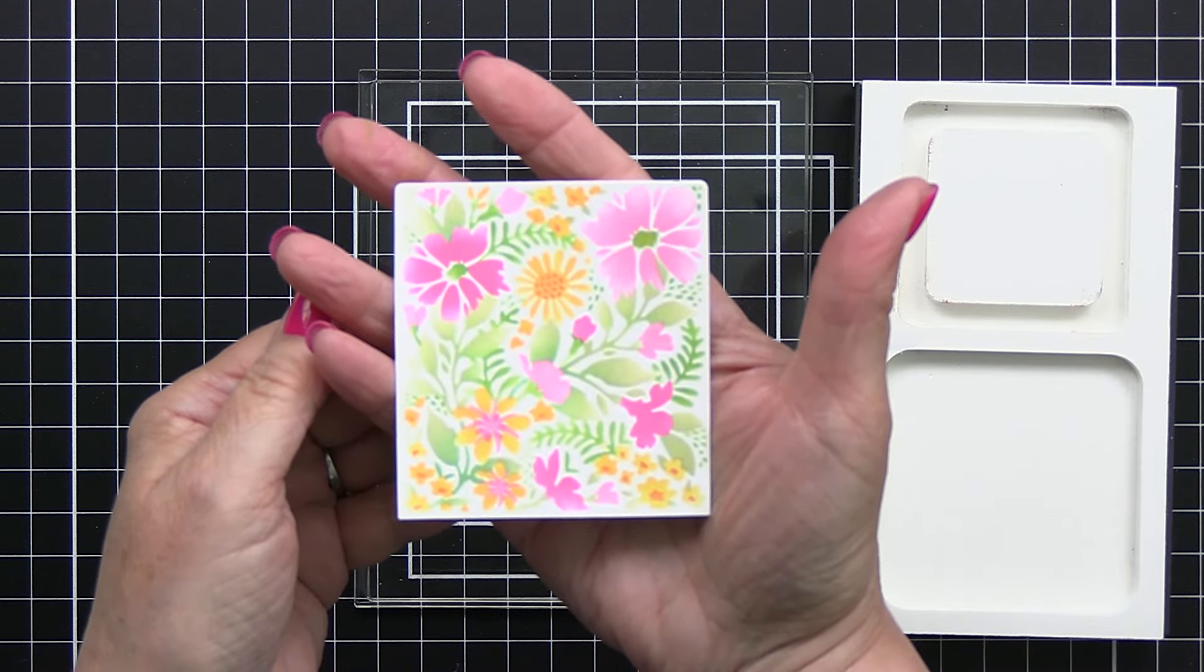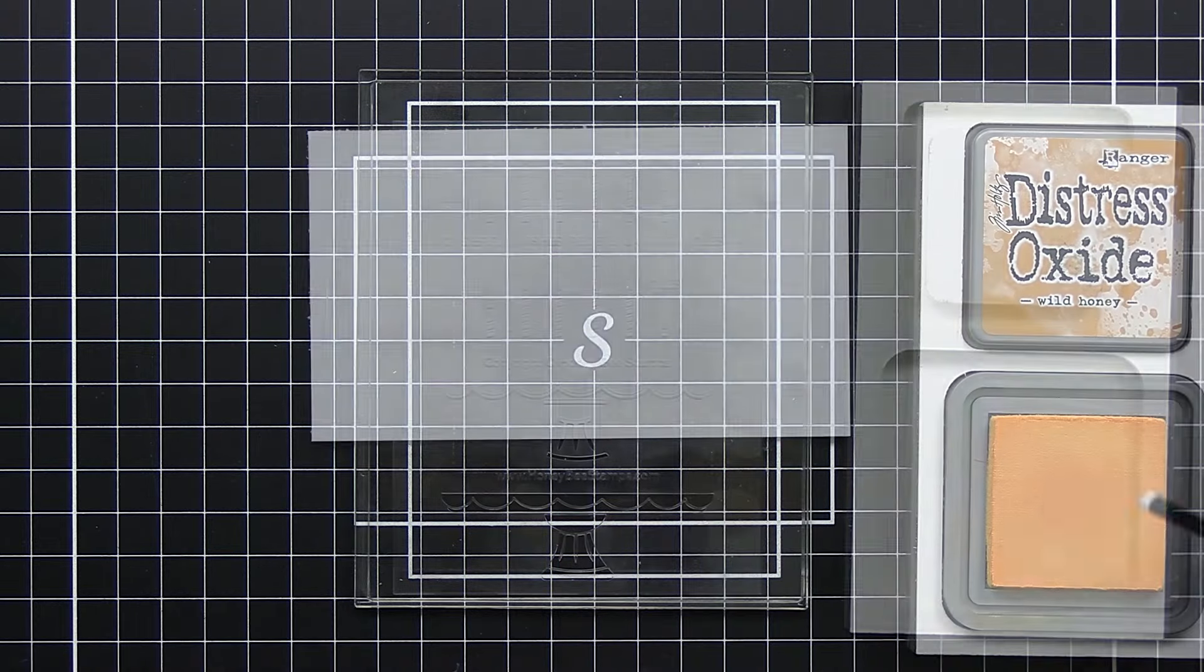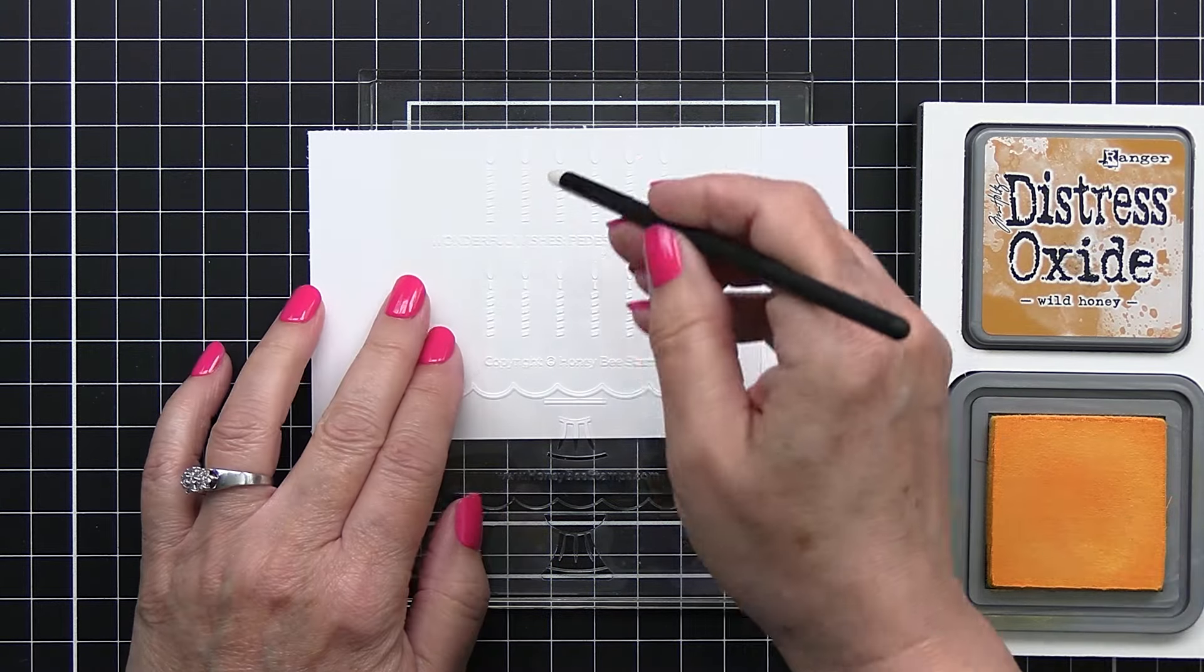Now I did actually use my Sheer Shimmer Spritz and spritzed over top of that to create just a little bit of shimmer.